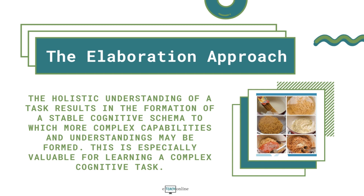The holistic understanding of a task also results in the formation of a stable cognitive schema to which more complex capabilities and understandings may be assimilated — especially valuable for learning a complex cognitive task. To identify simple to complex examples in a goal analysis, ask yourself and/or work with a subject matter expert to determine what is the simplest epitome of someone demonstrating or performing the goal. Identify the simplest example of the whole task that is fairly representative of the goal and describe the conditions that distinguish it from other versions of the task.